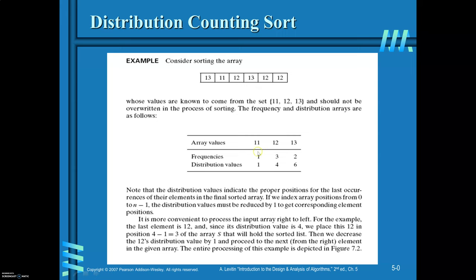For that, you are required to count the frequencies for distinct values of the array. Here, distinct values are 11, 12, 13. First, find out the frequency: for 11 it is 1, for 12 it is 3, and for 13 it is 2. Then, find out the distribution value. This is in order to place the values in the array. So, in the first place 11 will be there, from 2 to 4 you copy 12, and 5 to 6 for 13. So, 1 plus 3 is 4, and 4 plus 2 is 6. Like this, you are required to find out the distribution values.